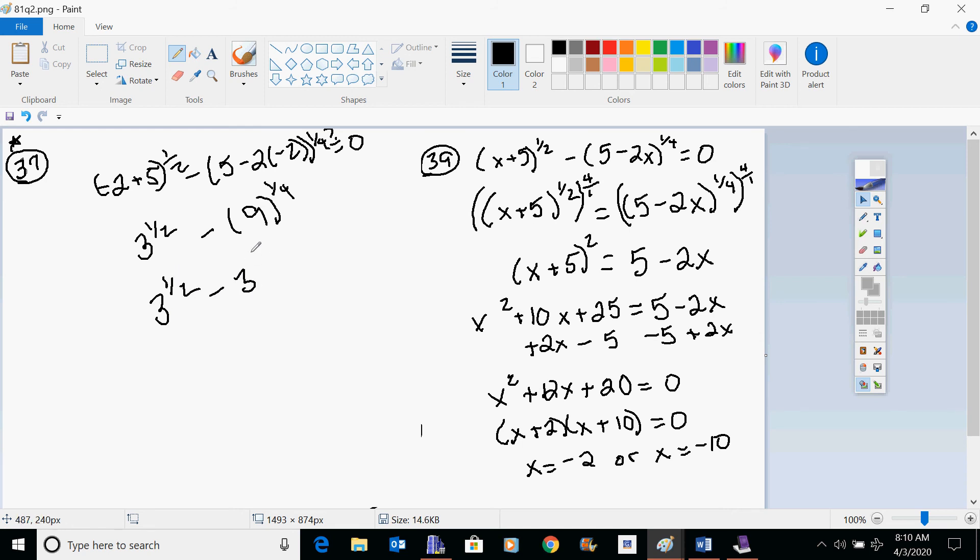Squared to the 1 fourth. It's a power to a power. So I have 3 to the 1 half minus 3 to the 1 half. This check got to be kind of challenging but fun. So that one checks out. This is definitely an answer. I want to check to see if the negative 10 will work. See if that's extraneous or not.